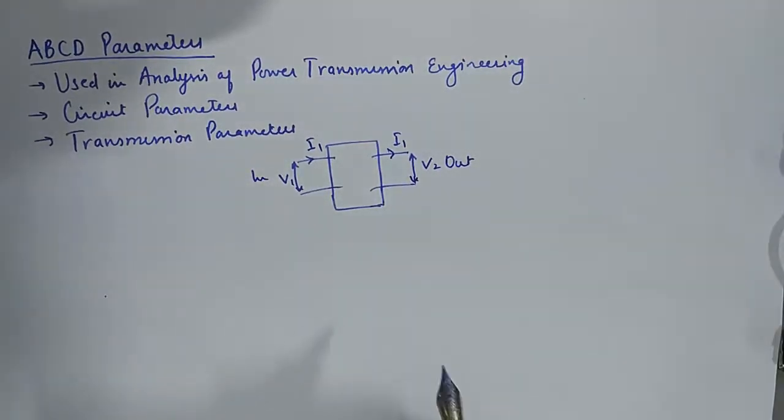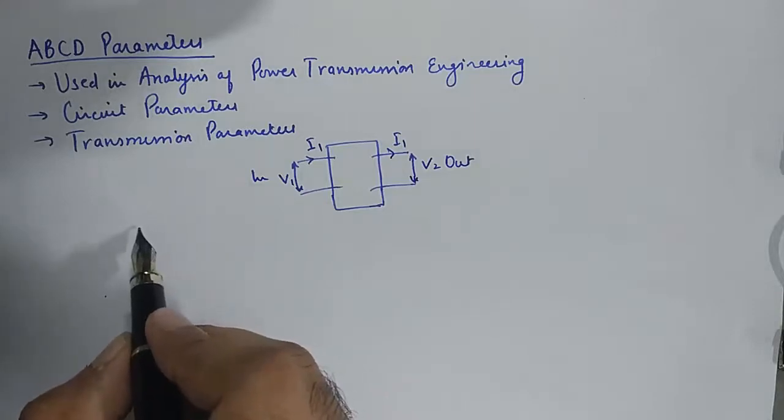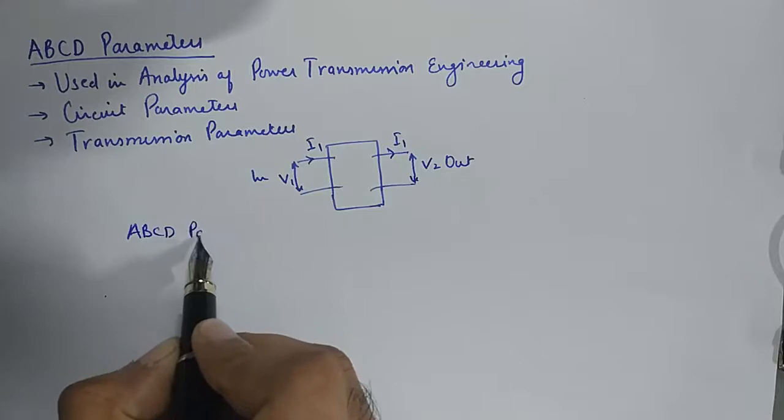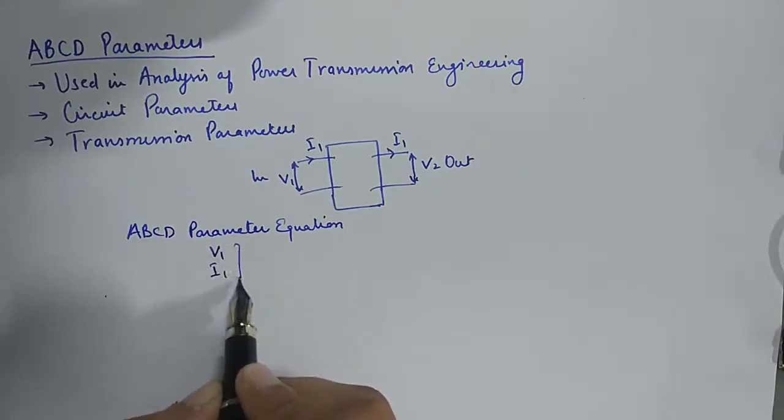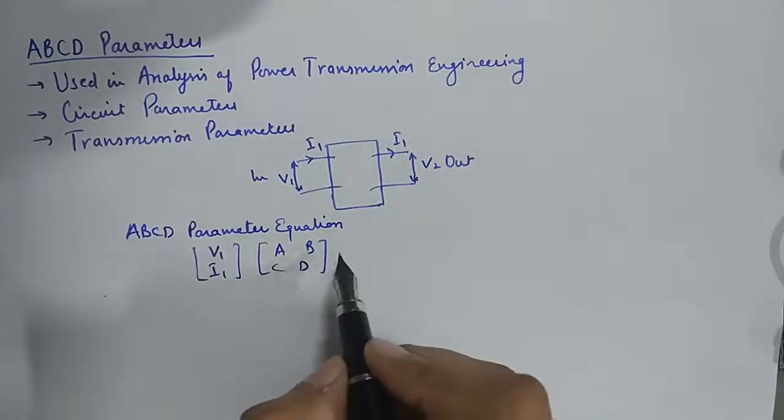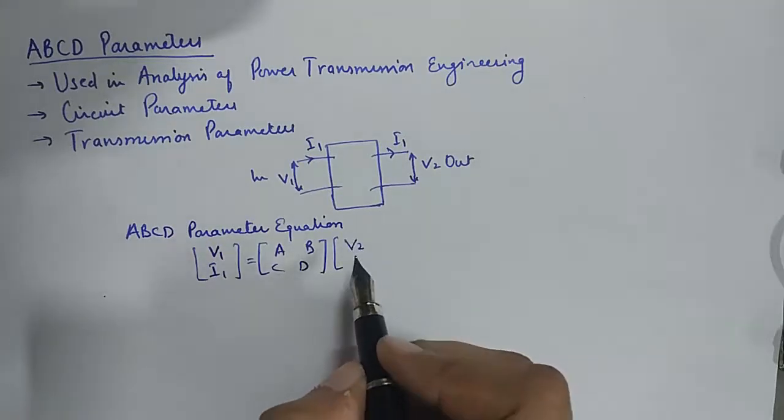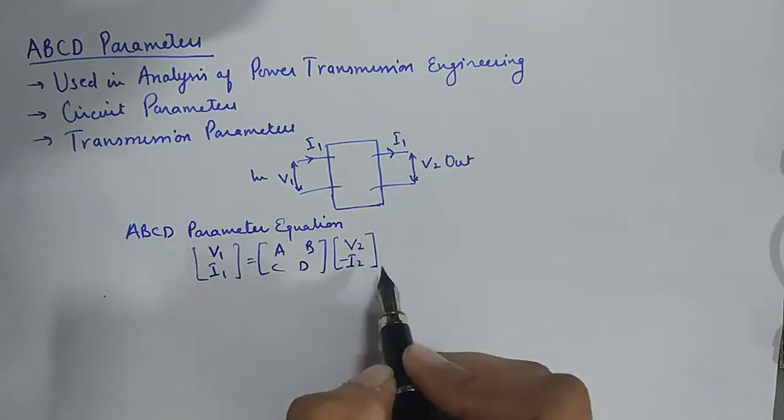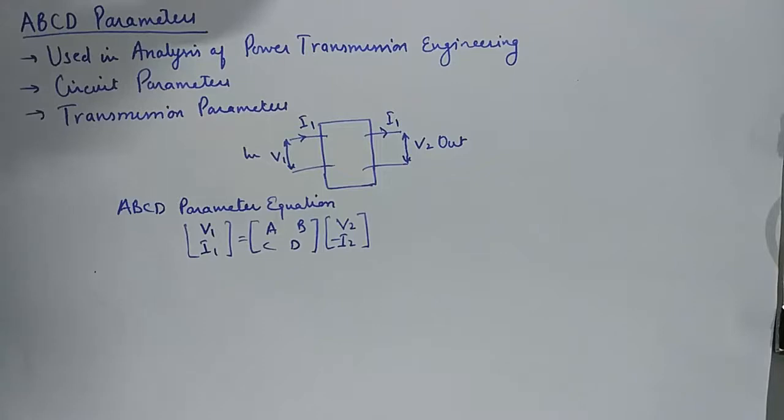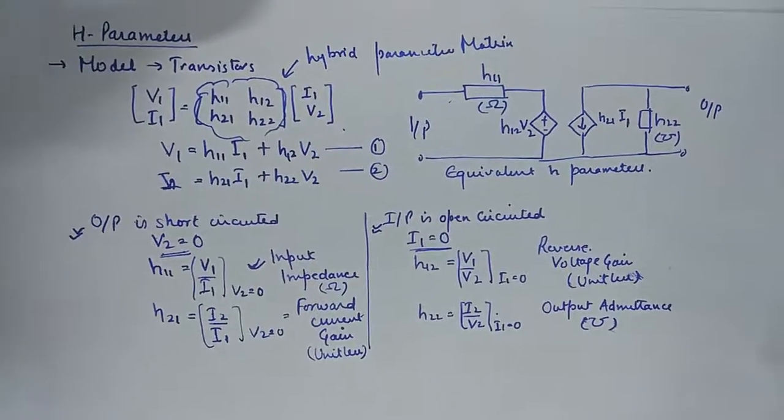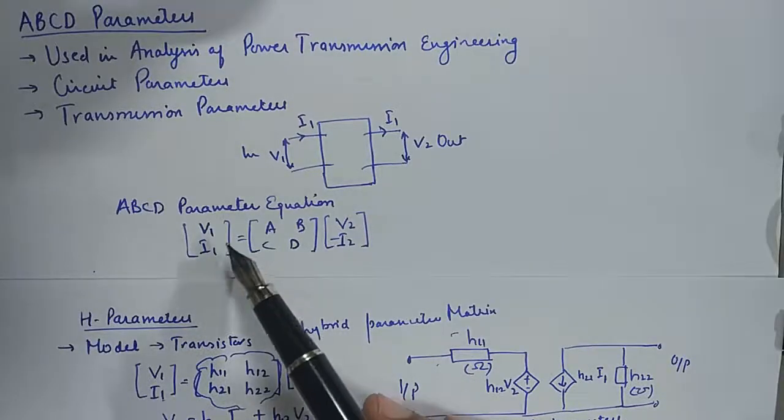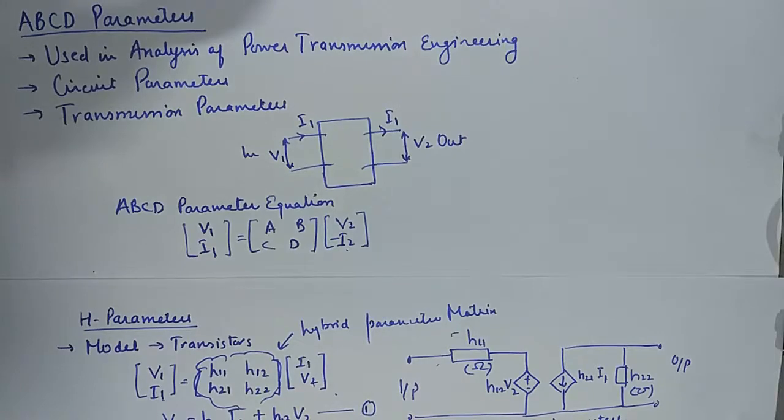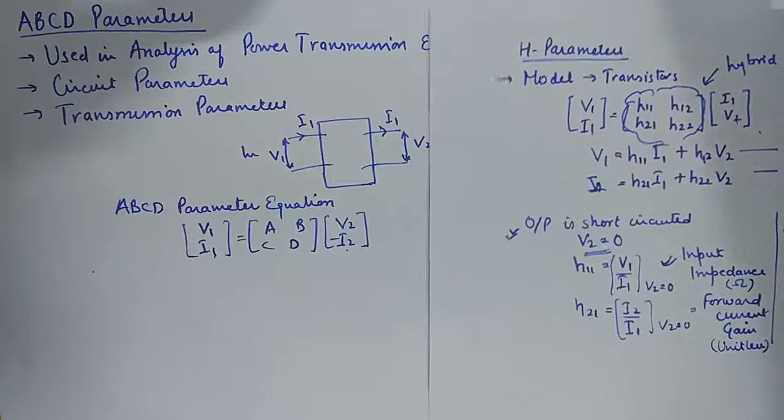In the ABCD parameter equation, first things first, you need to remember the ABCD parameter equation which is given by V1, I1. Please notice the negative sign here. If you compare this with the equation of h parameters from the previous tutorial: h parameter is V1, I1, V2; over here it is V1, I1, V2, minus I2. So the best way of learning these two equations is to learn by comparison.